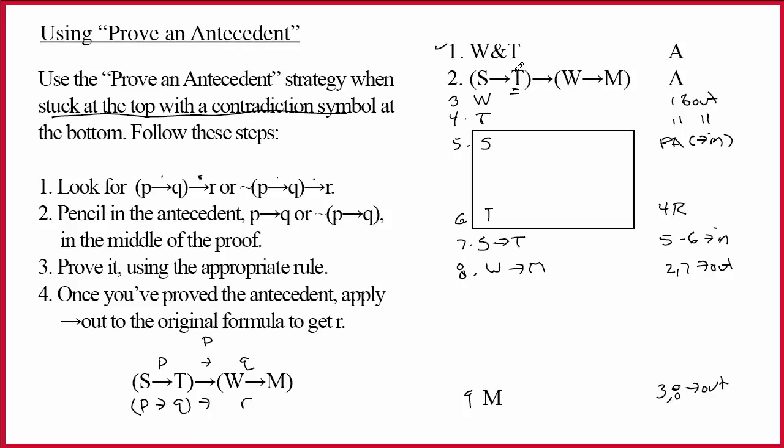And so, in general, you should use this strategy when you're stuck at the top with a contradiction symbol at the bottom. But if a case arises and you notice that you could do it more efficiently, like this, this is legal. I should point out, when you start looking for these things and you start getting creative, oftentimes you can make proofs harder for yourself. But I did want to point out that there is this alternative way to proceed.